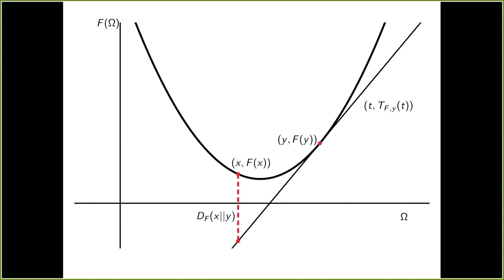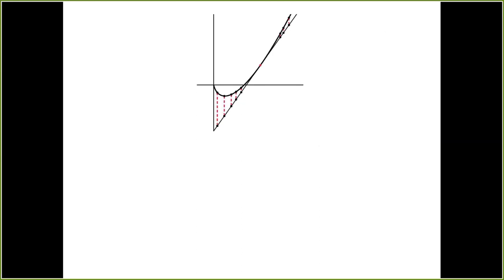Now let's have a look at some properties of Bregman divergences. So first of all, due to the strict convexity of f, the tangent space or the graph of the tangent space will always lie below the graph of f, and thus the Bregman divergence from x to y is always non-negative. And in addition, the tangent space will only touch the graph at the tangent point. So we know that the Bregman divergence is equal to zero if and only if the two points coincide.